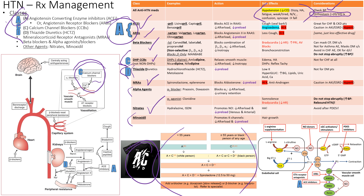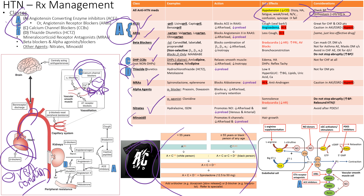DHP calcium channel blockers inhibit the smooth muscle calcium channels. If calcium gets into the smooth muscle, it will vasoconstrict, so DHPs stop that — they block the DHP calcium channels. Beta blockers reduce inotropy a little bit, but also reduce ventricular remodeling, which is important because without that the heart will progress to heart failure.